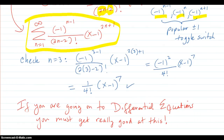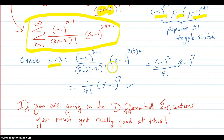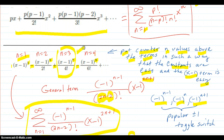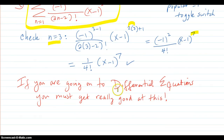Then you put a check on it — let's say for n equals 3. Negative 1 to the 3 minus 1, over 2 times 3 minus 2 factorial, times x minus 1 to the power of 2 times 3 plus 1. That's negative 1 squared over 4 factorial, times x minus 1 to the 7th. Negative 1 squared is positive, so it's 1 over 4 factorial times x minus 1 to the 7th. And yes, that is the term when n equals 3 — check. If you're going to go on to differential equations, you have to get really good at this kind of thing.